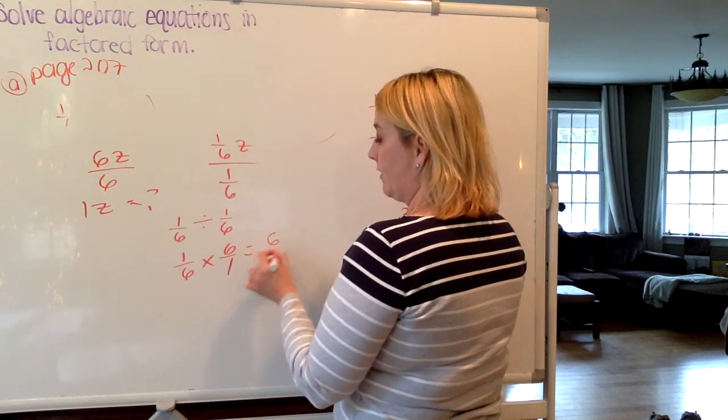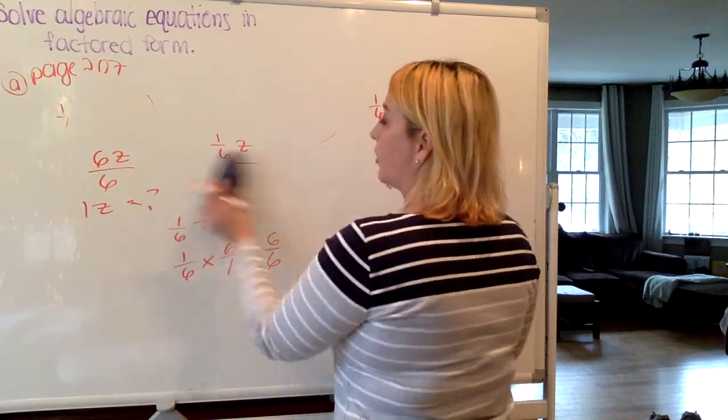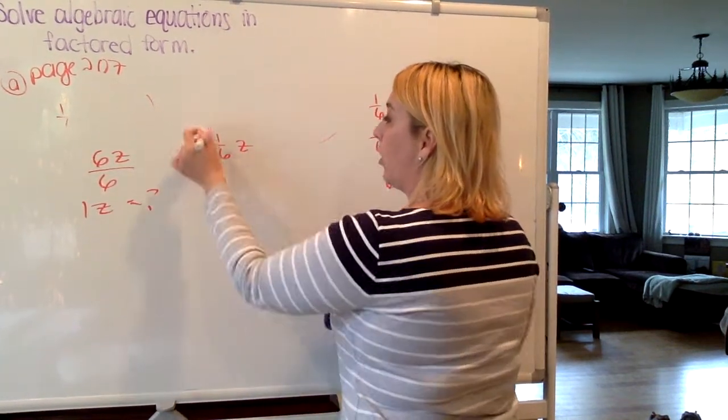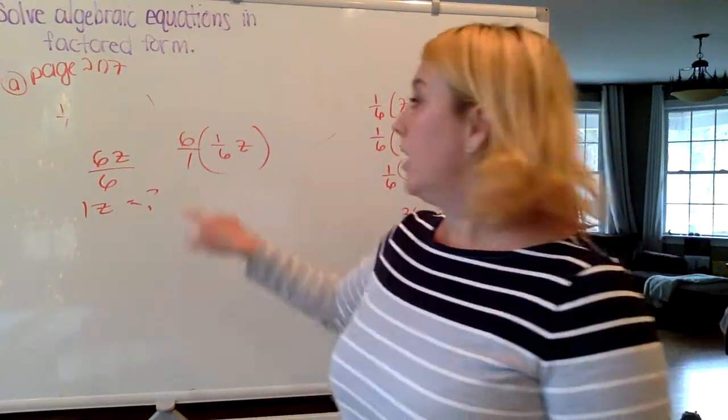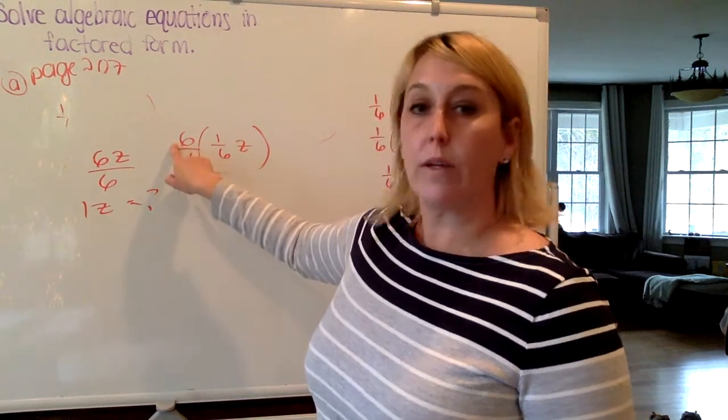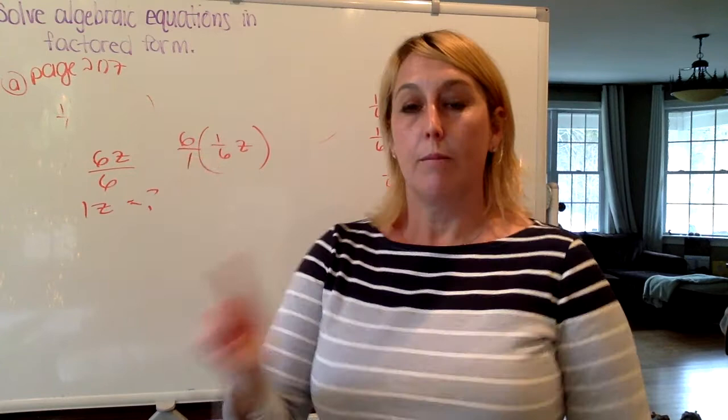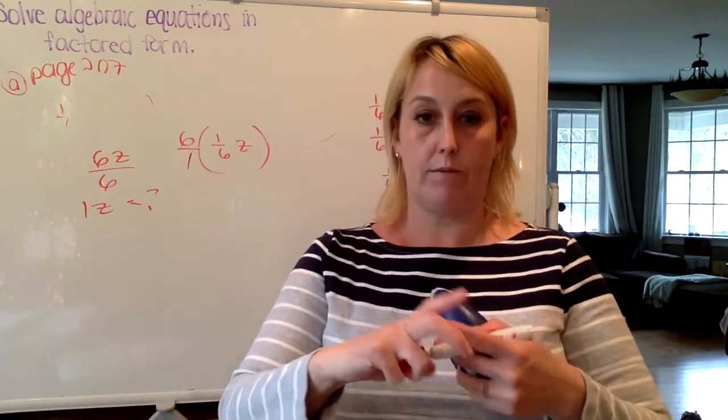And that gives us the 6 over 6. So that is why when you have a fractional coefficient, what you always are going to do is multiply by its reciprocal. So when you have a fractional coefficient, you are always going to multiply by the reciprocal because you're trying to get the coefficient to be equal to 1.